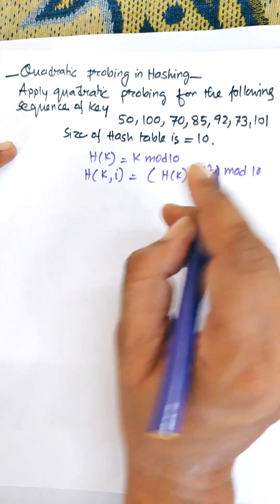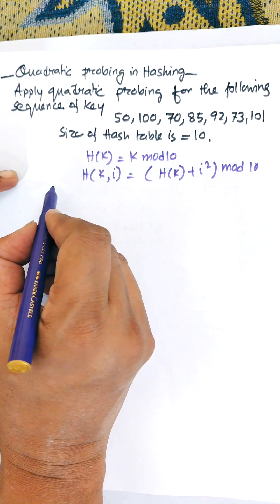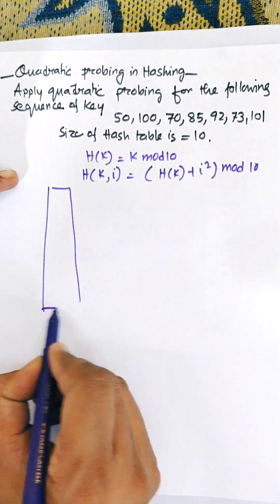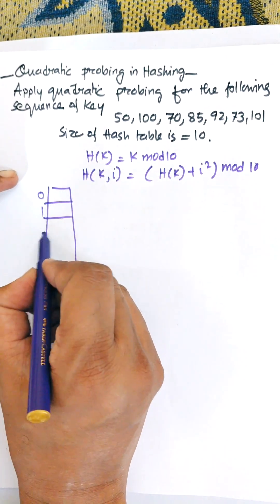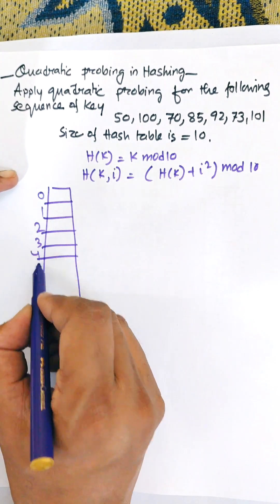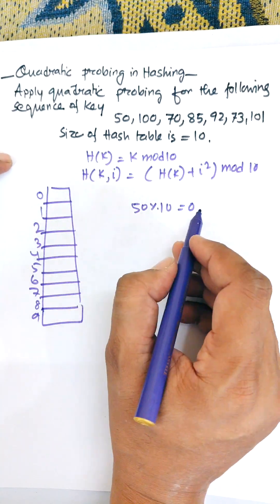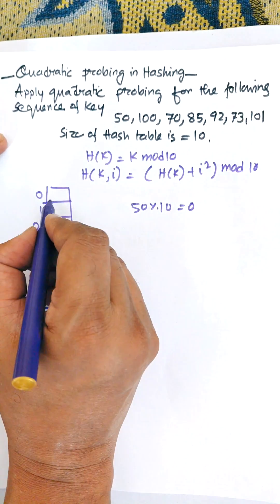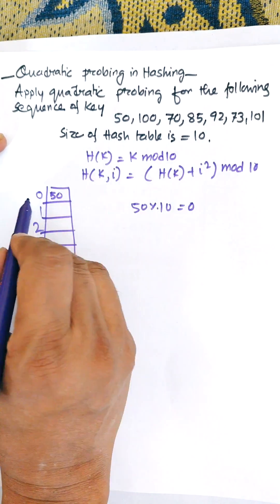There are 10 memory locations: 0, 1, 2, 3, 4, 5, 6, 7, 8, 9. For 50 mod 10, the result is 0, so 50 will be allocated at location 0.